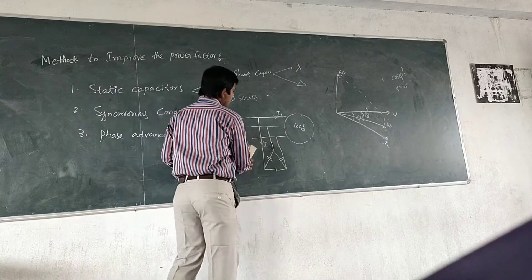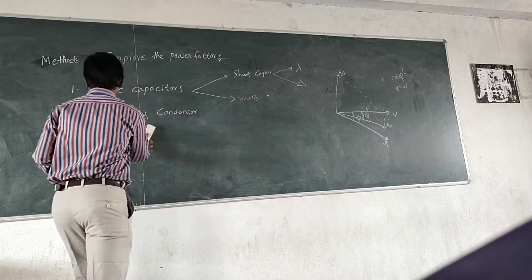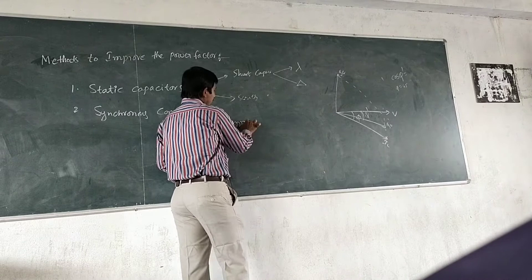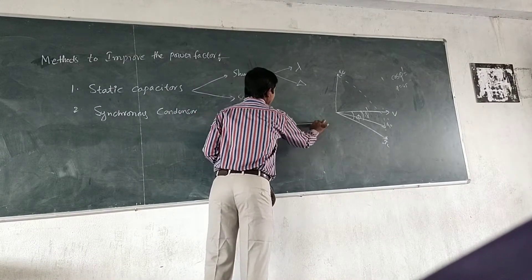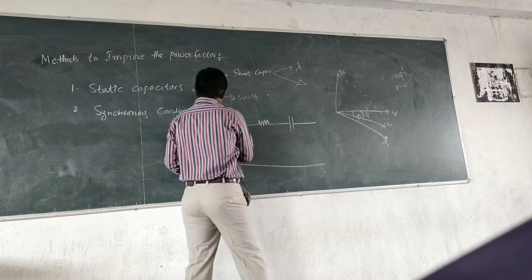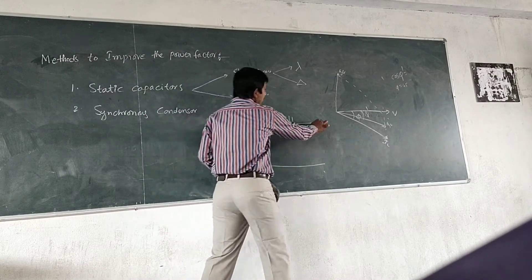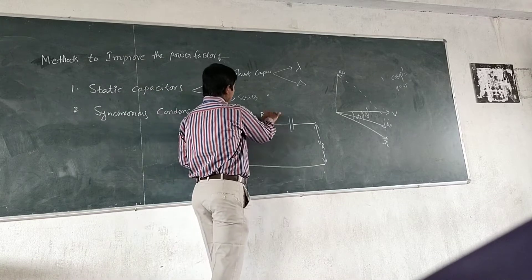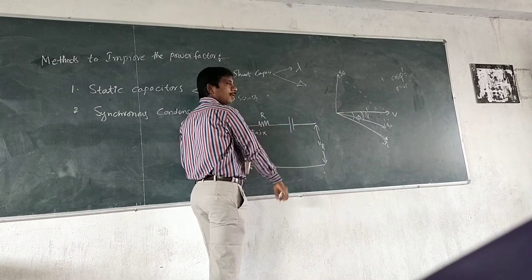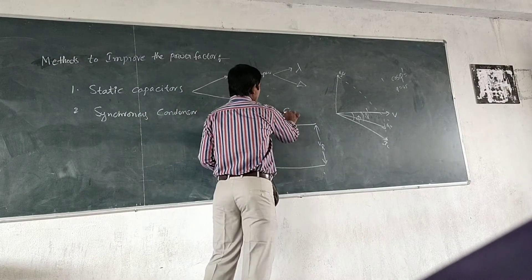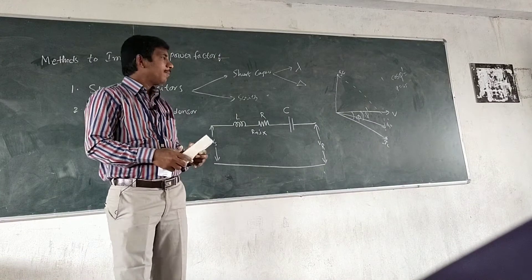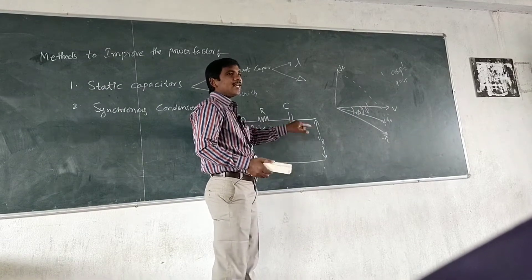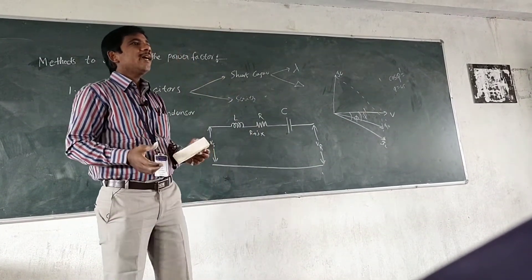Next, the series capacitors will be connected in series with the transmission line. This is the sending-end voltage and the receiving-end voltage. The impedance of the line is there, and then there is a series capacitor. Series capacitor improves the voltage level by injecting reactive power. It improves the voltage level of the system. Whereas shunt capacitors improve the power factor by injecting reactive power.